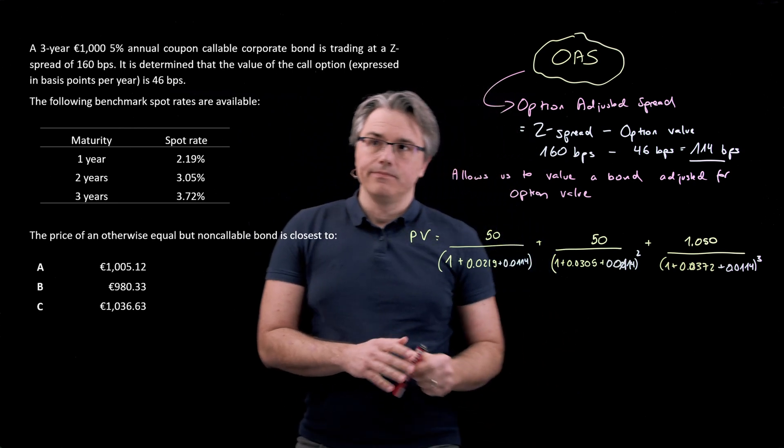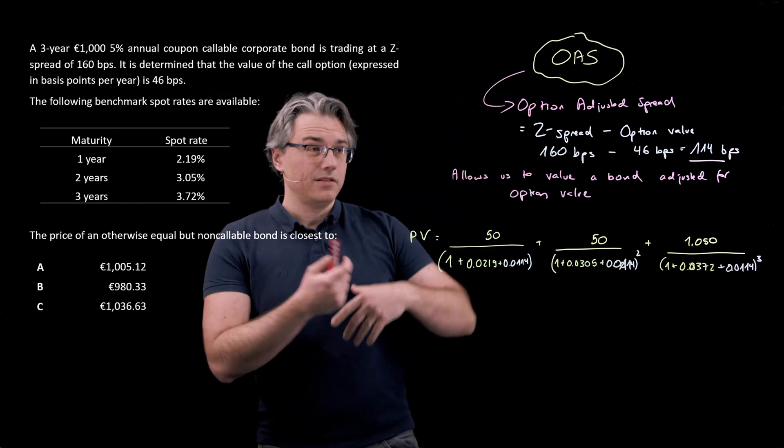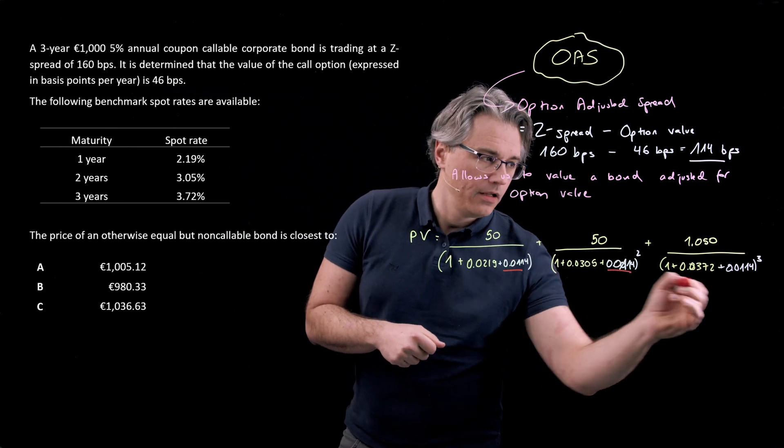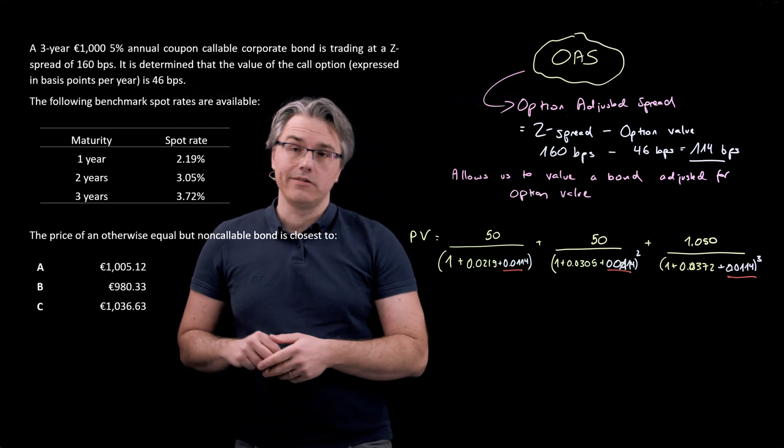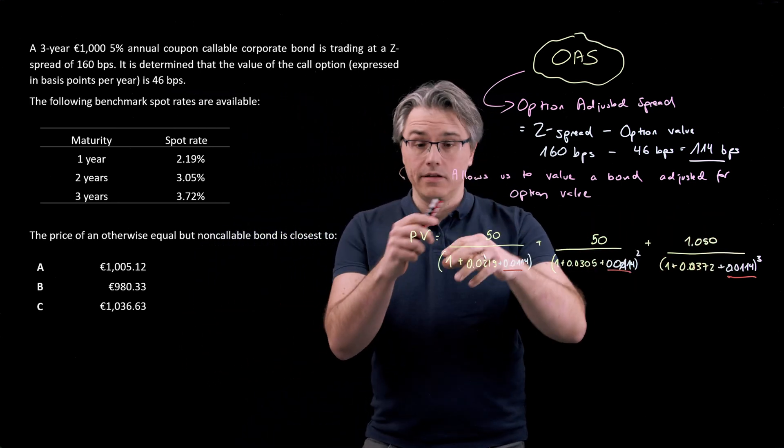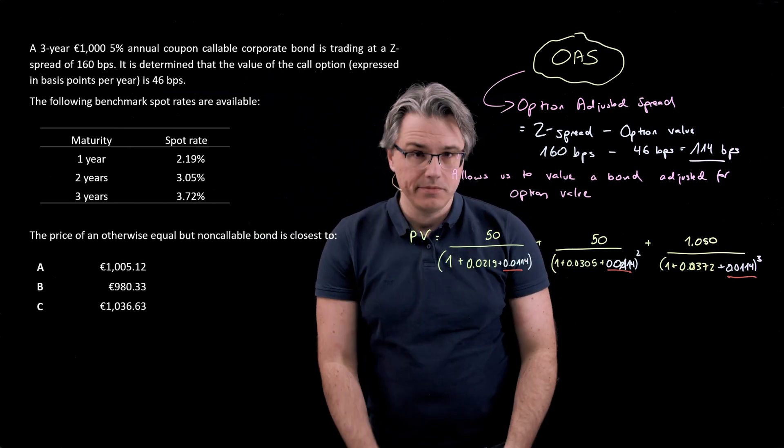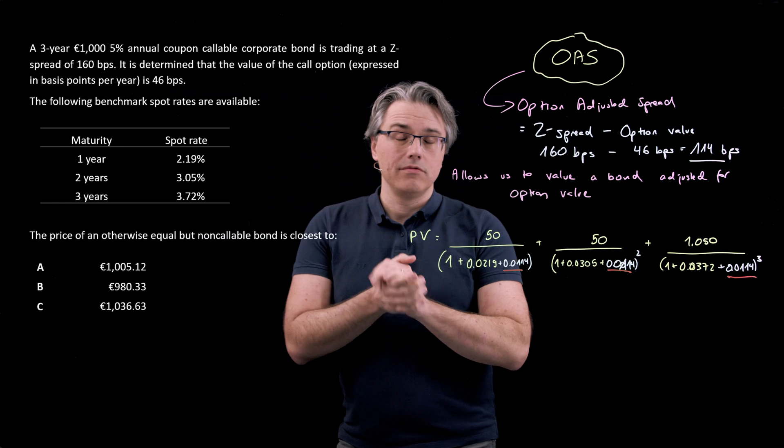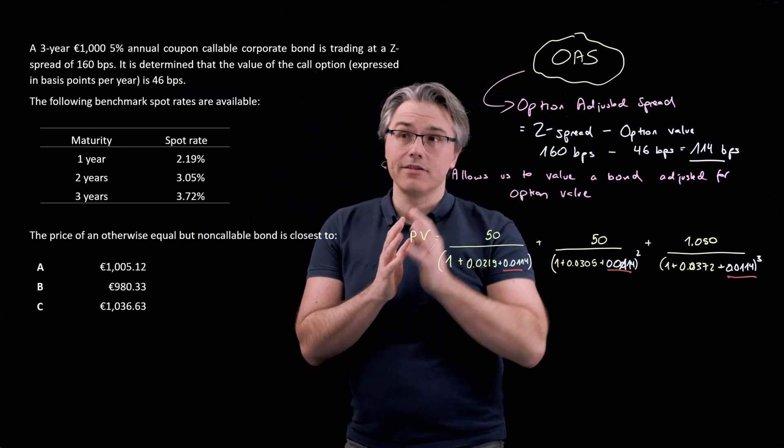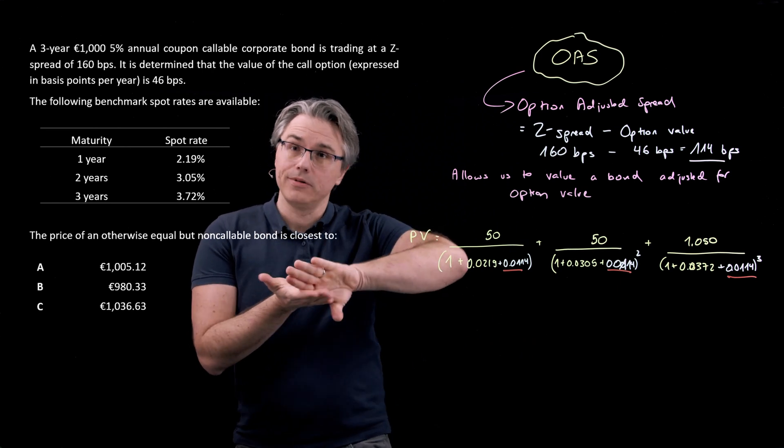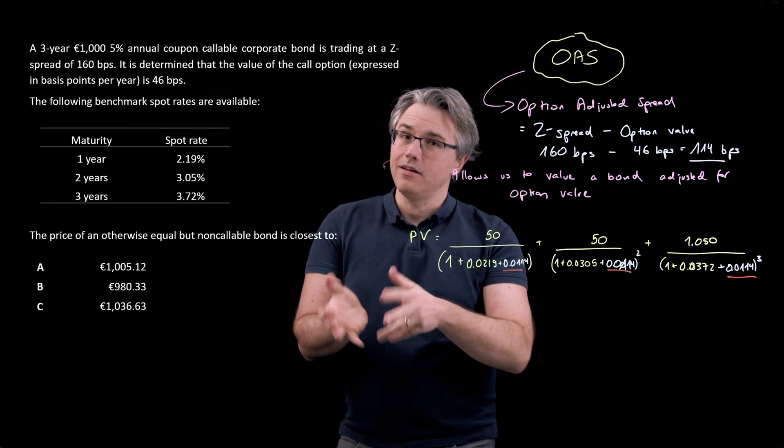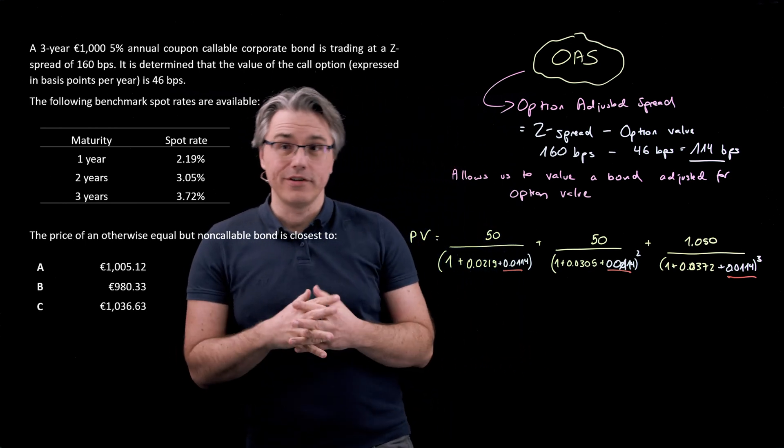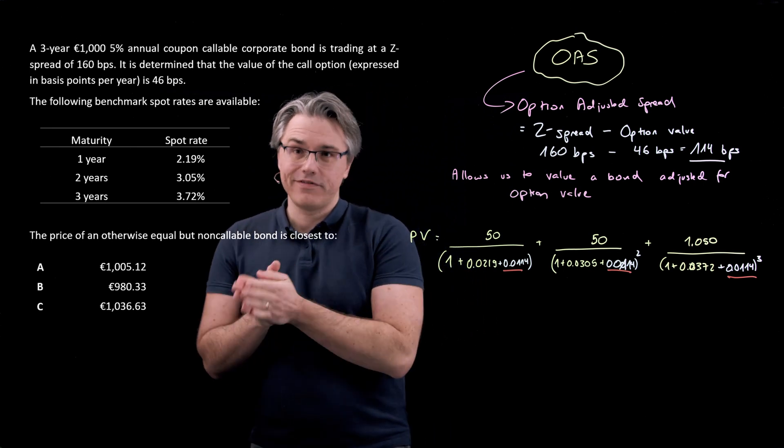Let me once again emphasize or recall that in the previous video where we were supposed to value the callable bond, we used the Z-spread, and that was a higher number over here, thus producing a higher denominator in the fractions, and therefore leading to a lower present value. Now, we're going to be discounting using these factors, and that's going to produce a higher present value, because when you are supposed to value a bond as if it didn't contain a call option, you're always going to get a higher number. Recall that a call option works against the holder of the bond and in favor of the bond issuer. A bond without any callable features is going to be priced higher than an equivalent bond with a call option attached.